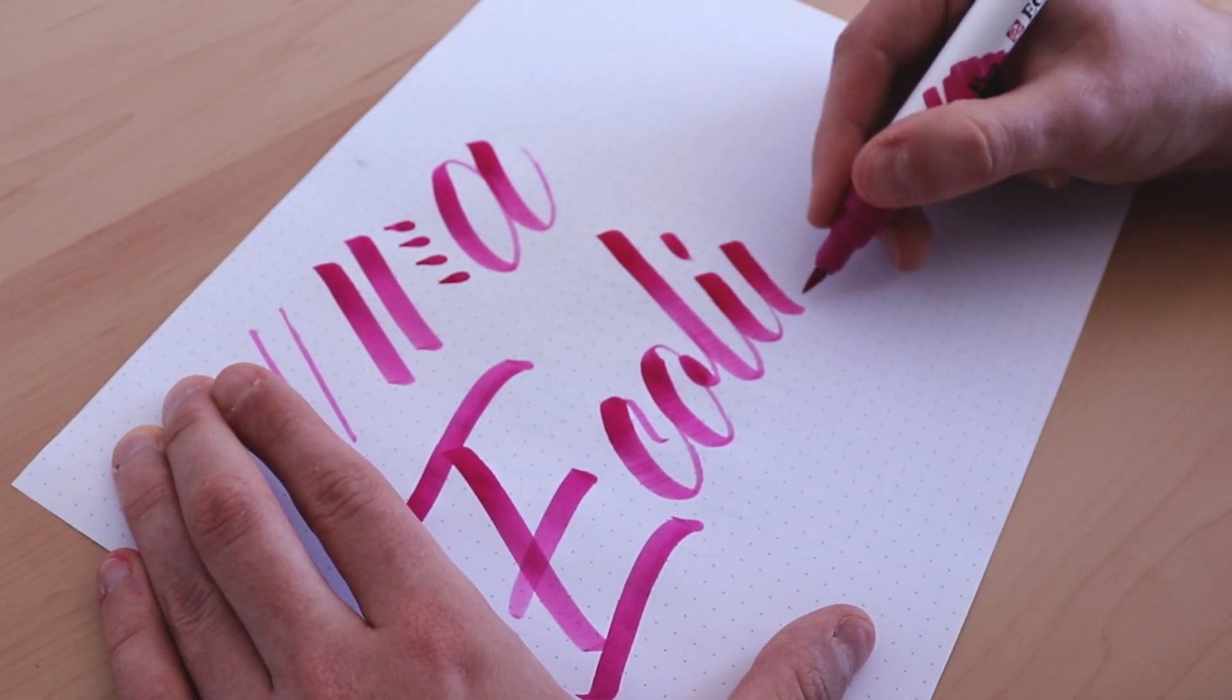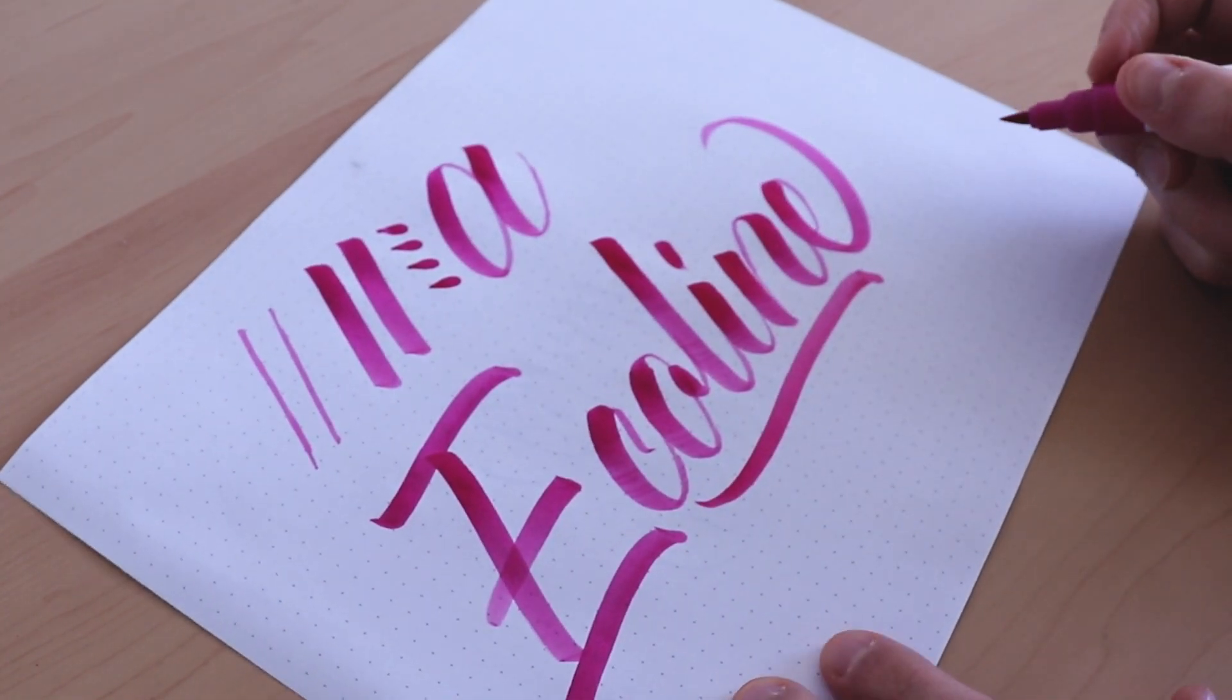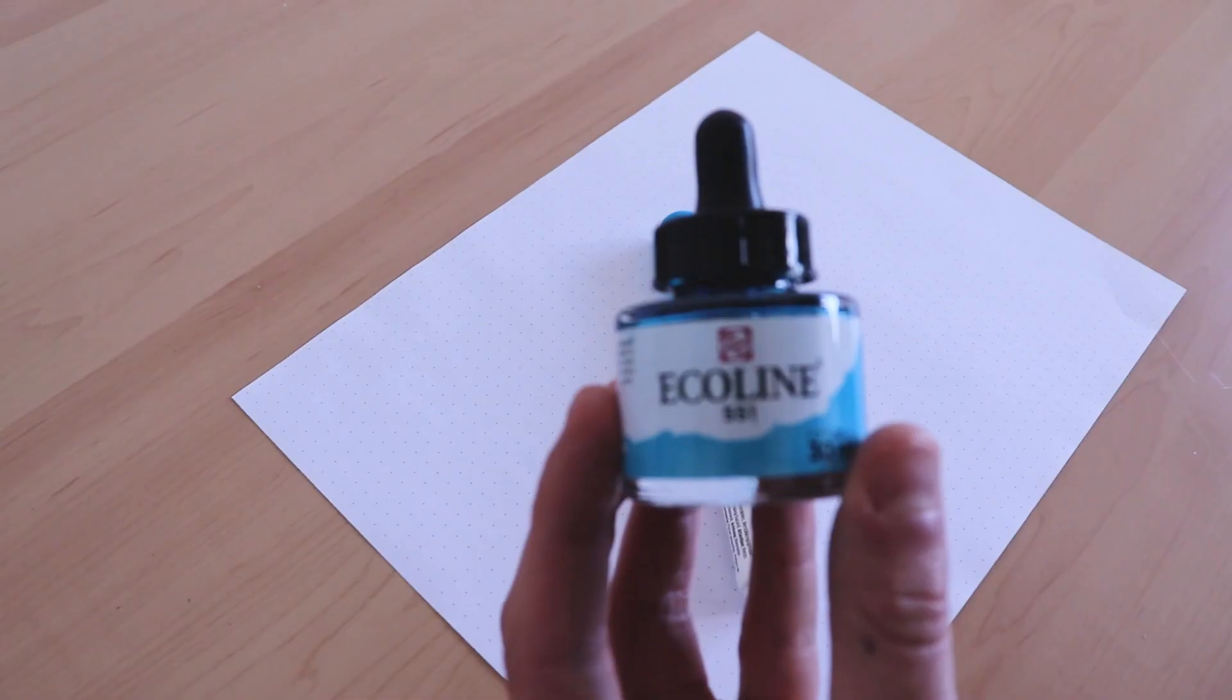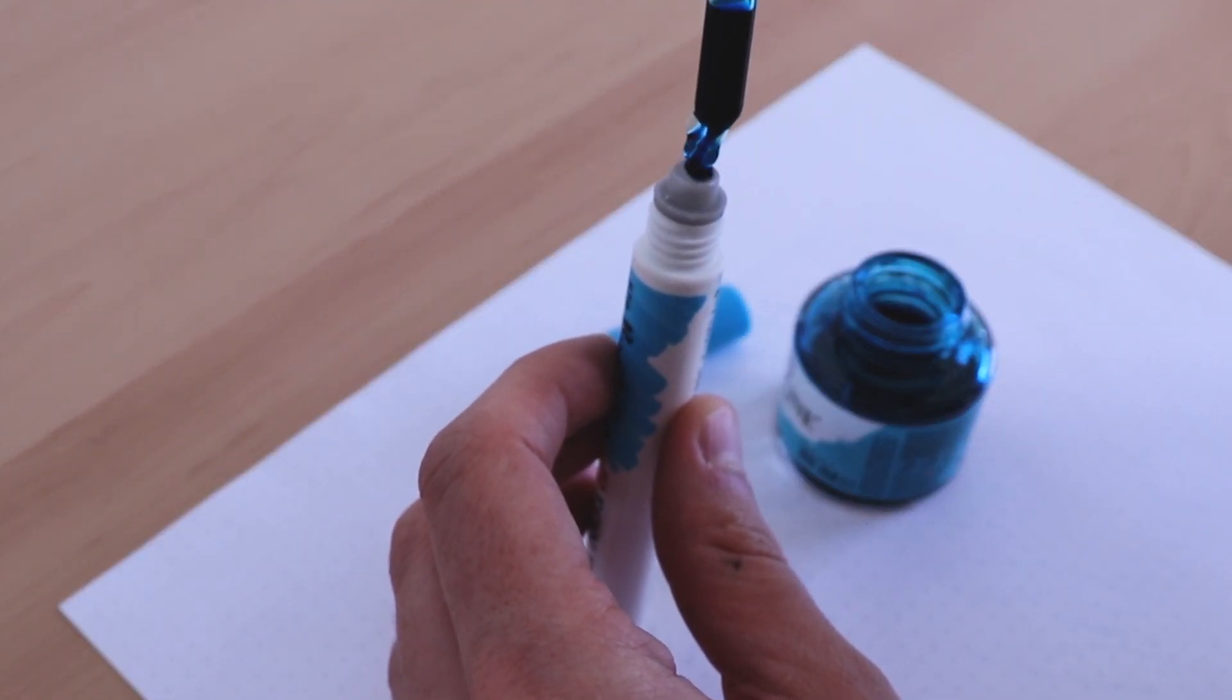The Ecoline Brush Pen is really fun to work with and my favorite part is the wet ink flow and the effect that it creates as you write. Another great feature is that you can also recharge the pen with the Ecoline Watercolor Ink which makes it environmentally friendly.